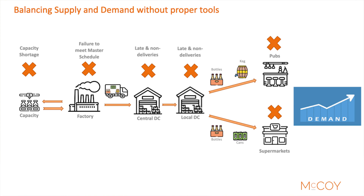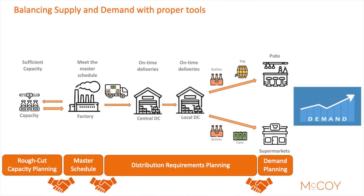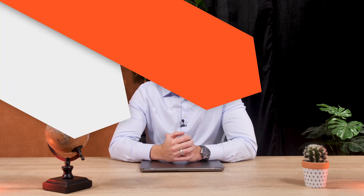Capacity shortage could be the result, which leads to failure to meet the master production schedules, which in turn leads to late and non-deliveries in RDCs, with failures to meet the anticipated demand. With proper techniques like demand planning, DRP, MPS, and RCCP, we will be able to effectively assess the impact of our demand plan on our supply network. This is subsequently used to balance supply and demand, which will lead to sufficient capacity, schedules and plans are met, and deliveries are on time and in full. This has all been made easy by SAP IBP.